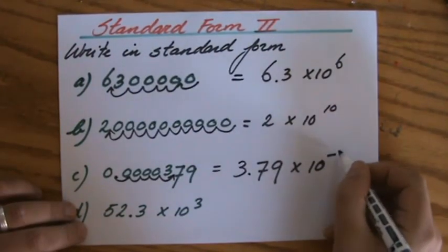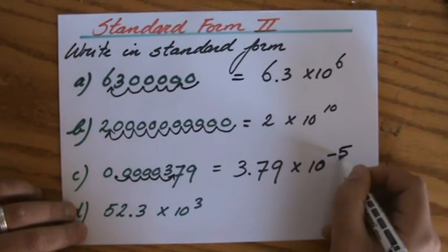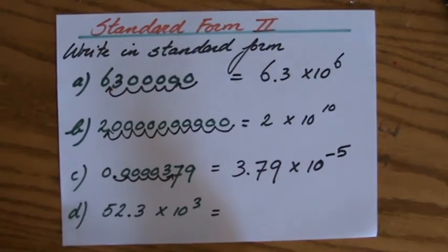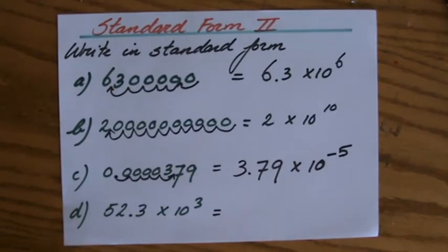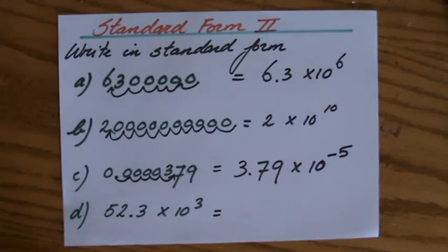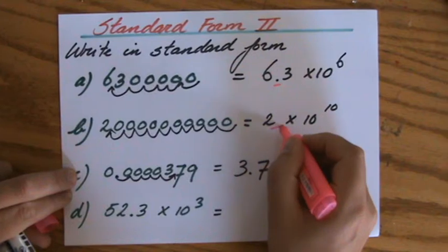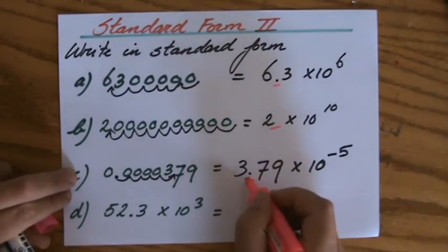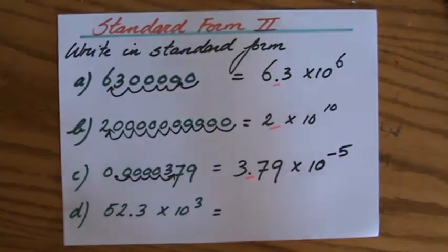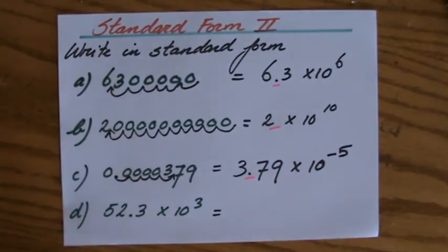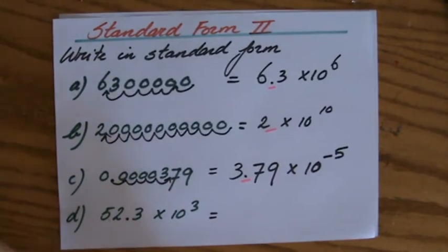And then the last one: 52.3 times ten to the power three. Now that actually already looks like standard form, doesn't it? However, standard form is always the number immediately followed by the decimal point - just one number. 3.79, 6.3, 2... Here it's 52.3, so that's not standard form because that decimal point should be over there.